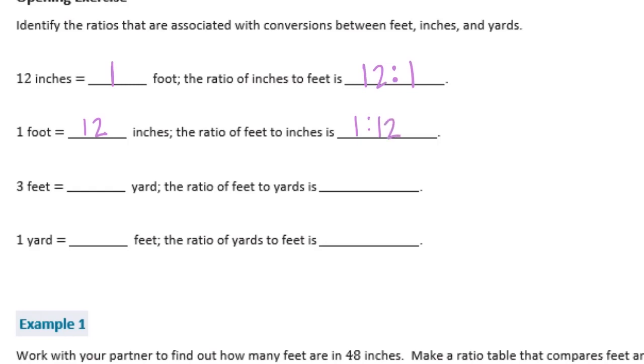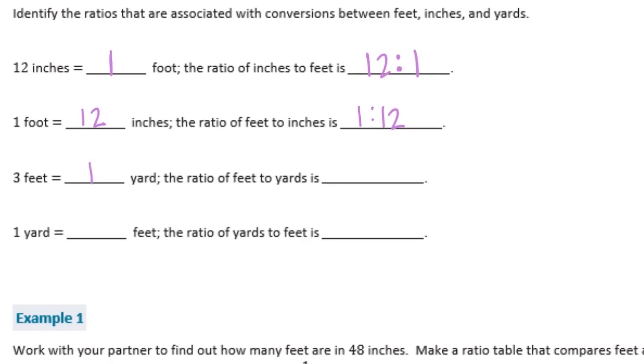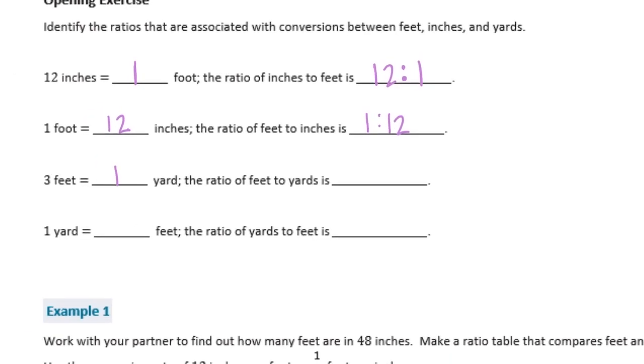3 feet is equal to how many yards? Just 1. So the ratio of feet to yards is 3 to 1. And 1 yard is equal to 3 feet. So the ratio of yards to feet is 1 to 3.